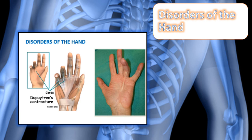Dupuytren's contracture is a slowly progressive thickening of the palmar fascia that causes a flexion contracture of the fourth and fifth fingers. It occurs mostly in older Caucasian men, can run in families, and can be bilateral. A ganglion is a round benign cyst commonly found in a wrist or foot joint or tendon, where the synovium degenerates causing the tendon sheath tissue to become weak and distended; pain is often an issue as well.